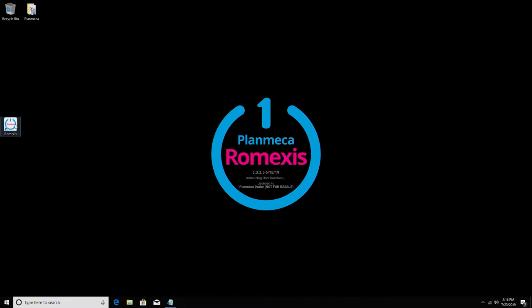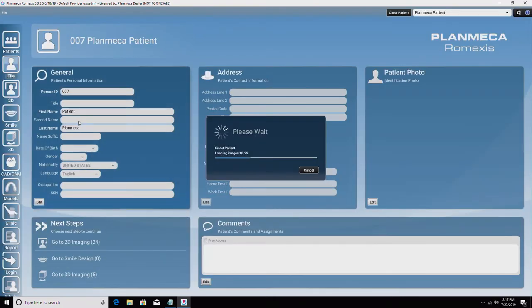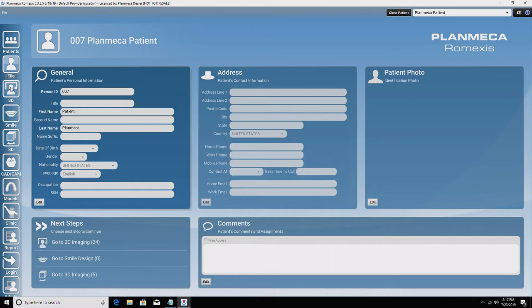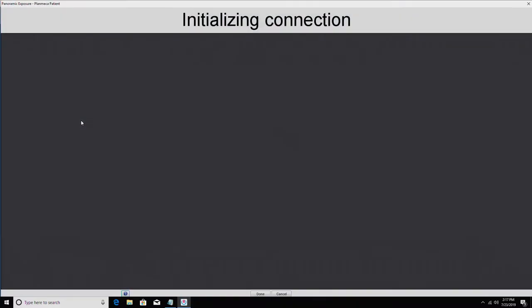Select the appropriate patient. Select 2D module from the menu on the left, or choose go to 2D imaging from next steps located on the bottom left of the patient dashboard. Select panoramic exposure from the 2D imaging dashboard or from the top drop-down menu.